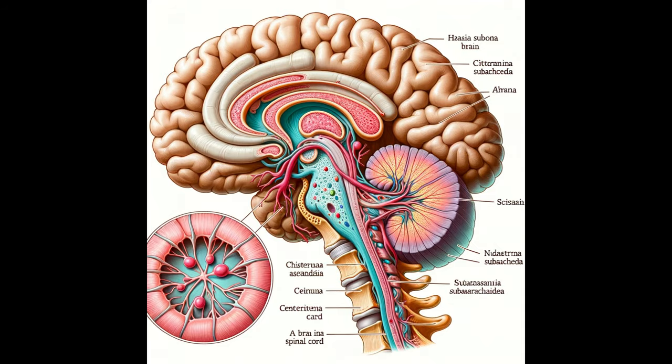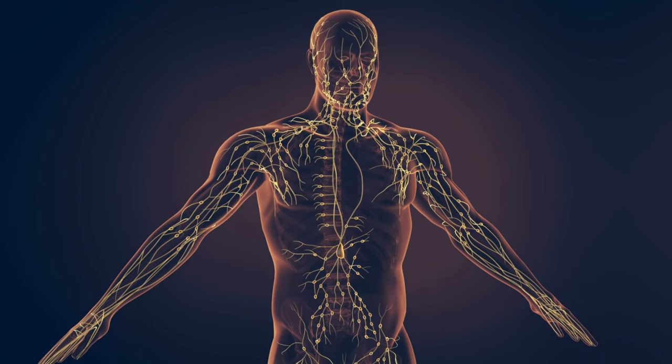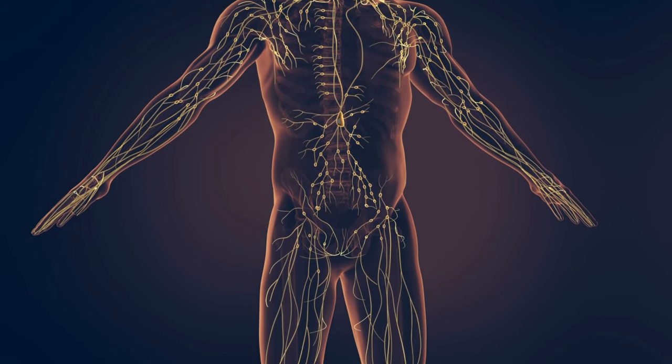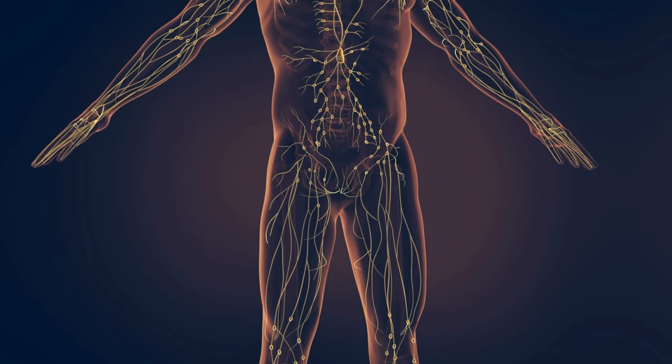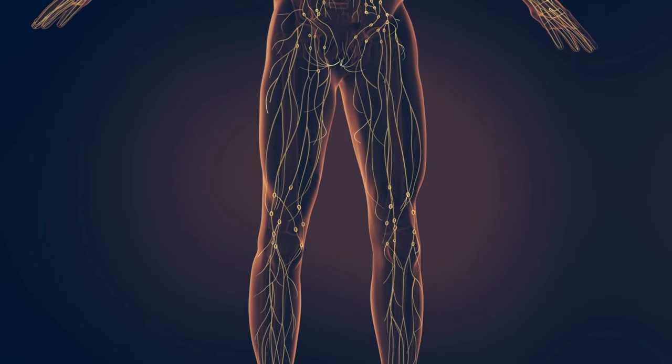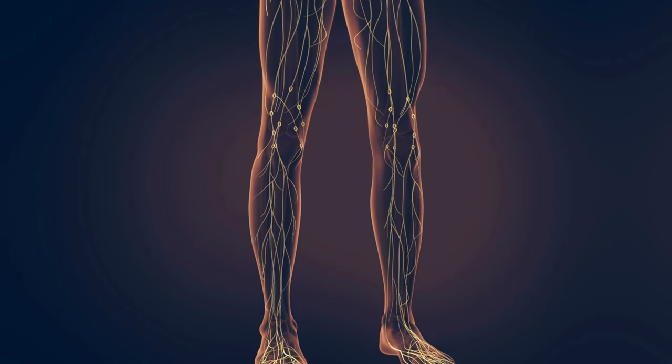The cisterna chyli is particularly vital as it drains white fat from our digestive organs. The lymphatic system is the unsung hero of our body. It maintains fluid balance, absorbs fats and vitamins, and acts as our defense against disease-causing microorganisms.